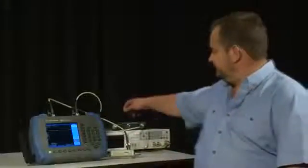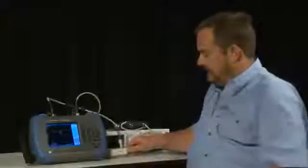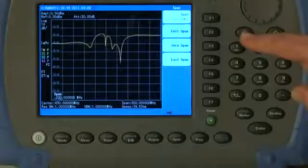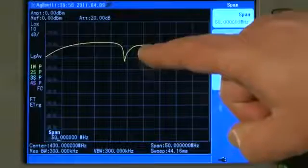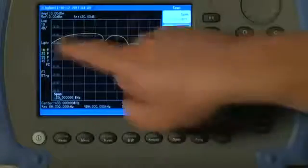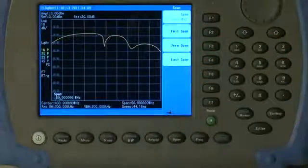Now if I connect the filter, and press Span, and we will zoom in a bit, you can see here the return loss of the filter. But of course we have not yet normalized the trace, so the values on here are relatively meaningless until we do that.